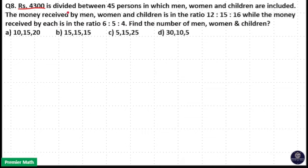Rs. 4300 is divided between 45 persons in which men, women and children are included. The money received by men, women and children is in the ratio 12 is to 15 is to 16, while the money received by each is in the ratio 6 is to 5 is to 4. Find the number of men, women and children.